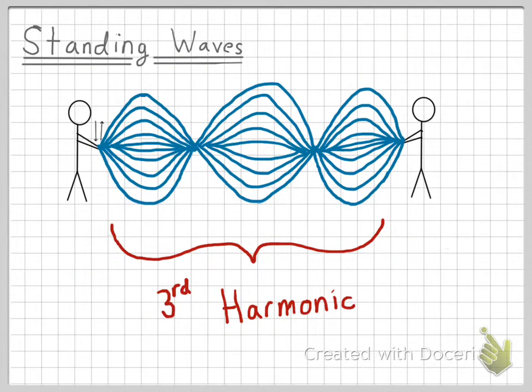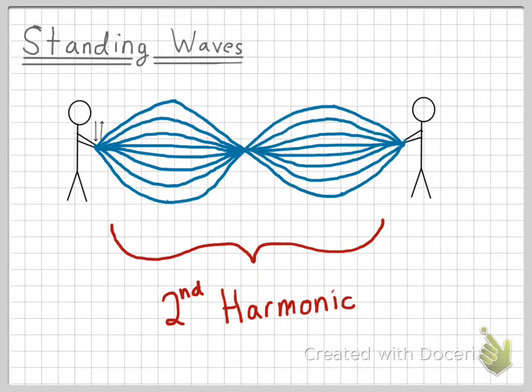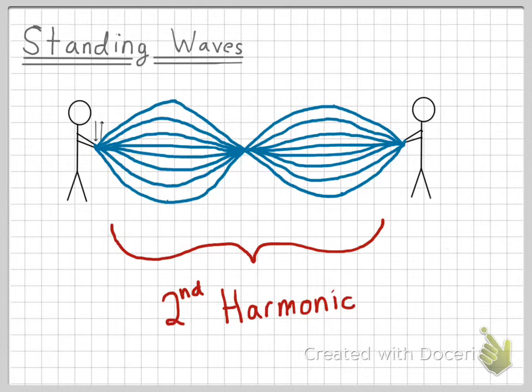Whenever there are three sets of antinodes, the standing wave is said to be the third harmonic. When there are only two sets of antinodes, the standing wave is said to be the second harmonic. And if there's only one set of antinodes, the standing wave is said to be the first harmonic.